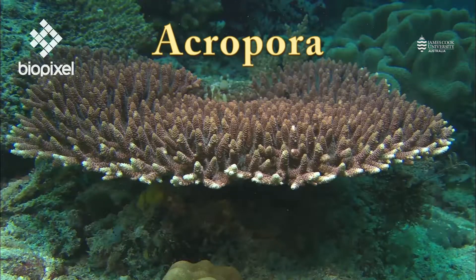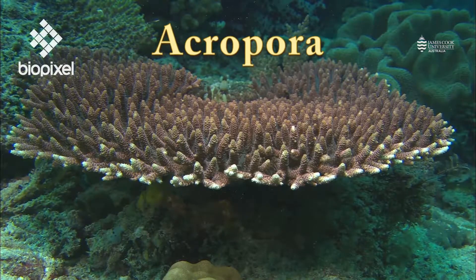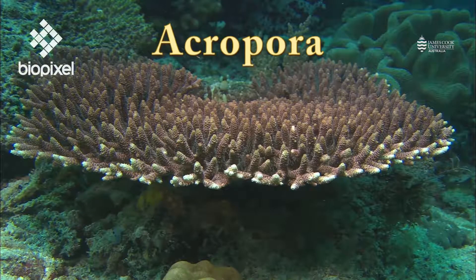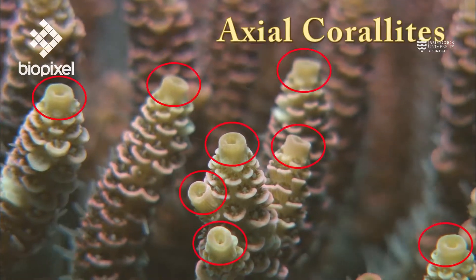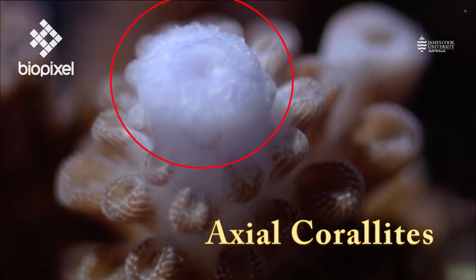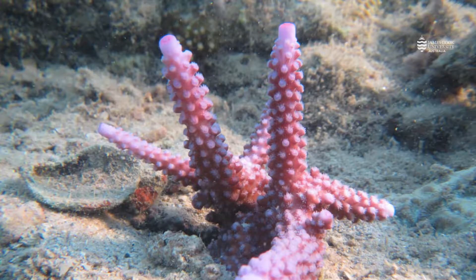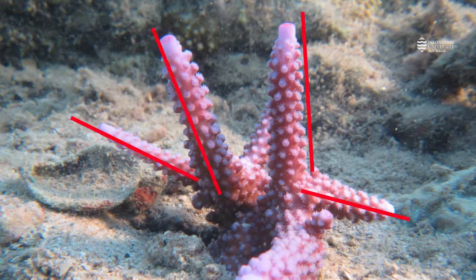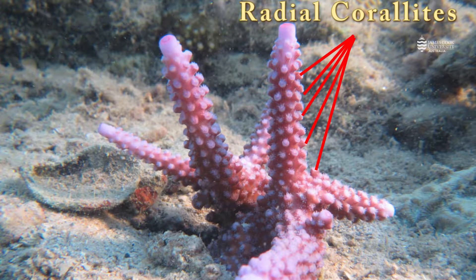The feature that distinguishes Acroporas from all other branching corals is the presence of an axial corallite. You can see axial corallites here and here. The axial corallites are a special structural corallite that runs all the way up the centre of the branch, pointing in the direction that the branch is growing. Along the sides of the branches we have different corallites called radial corallites, which are usually a bit smaller than the axial corallites.